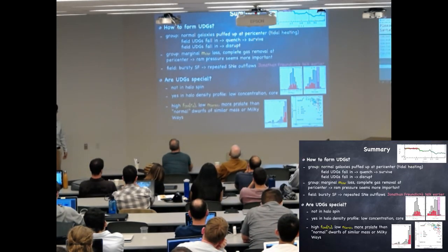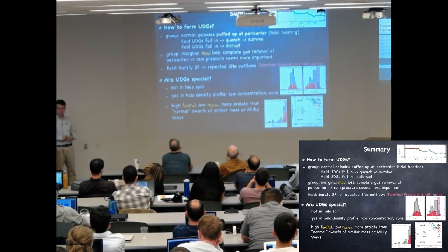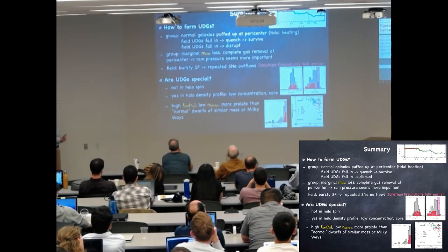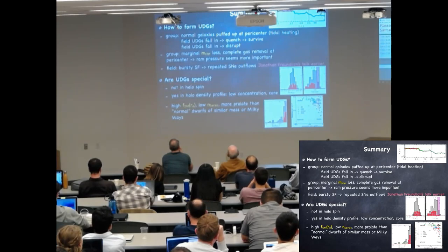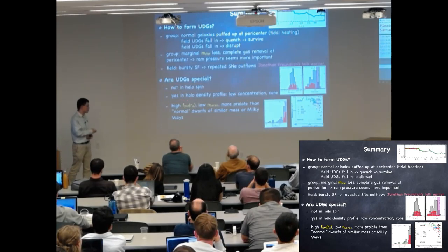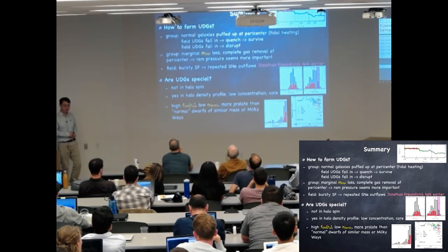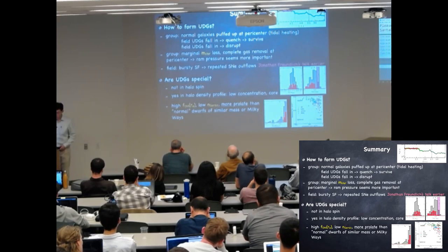To summarize: for how UDGs form in galaxy groups, we have three channels - normal dwarfs can get puffed up into UDGs; field UDGs can fall in and quench and survive; and field UDGs can fall in and get disrupted. Regarding whether UDGs are special: they are not special in halo spin, but they are quite special in halo density profiles. They have relatively high dark matter fractions within the effective radius, low Sersic indices, and they are quite prolate in morphology.